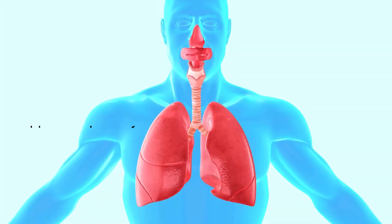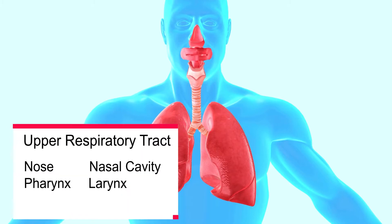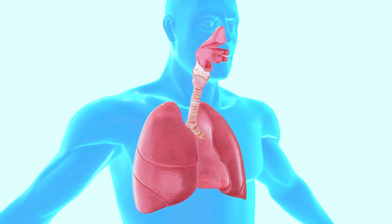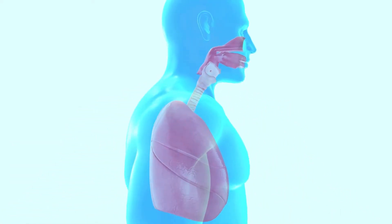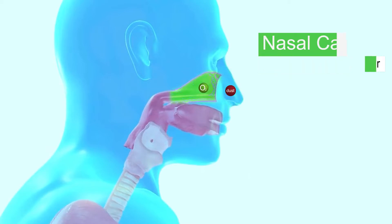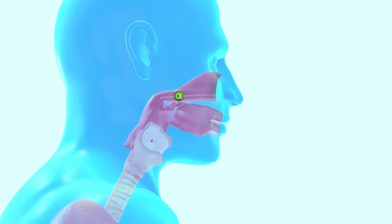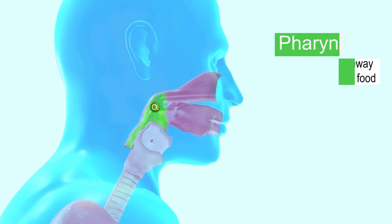The upper respiratory tract consists of the nose, nasal cavities, pharynx, and larynx. The air that we breathe in is inhaled through the nose and filtered through the nostrils. Coarse hair present in the nostrils traps large dust and dirt particles, which are then coated with mucus from the glands and nasal cavity. The warmed, moistened, and filtered air moves through a muscular tube in the upper throat, called the pharynx.